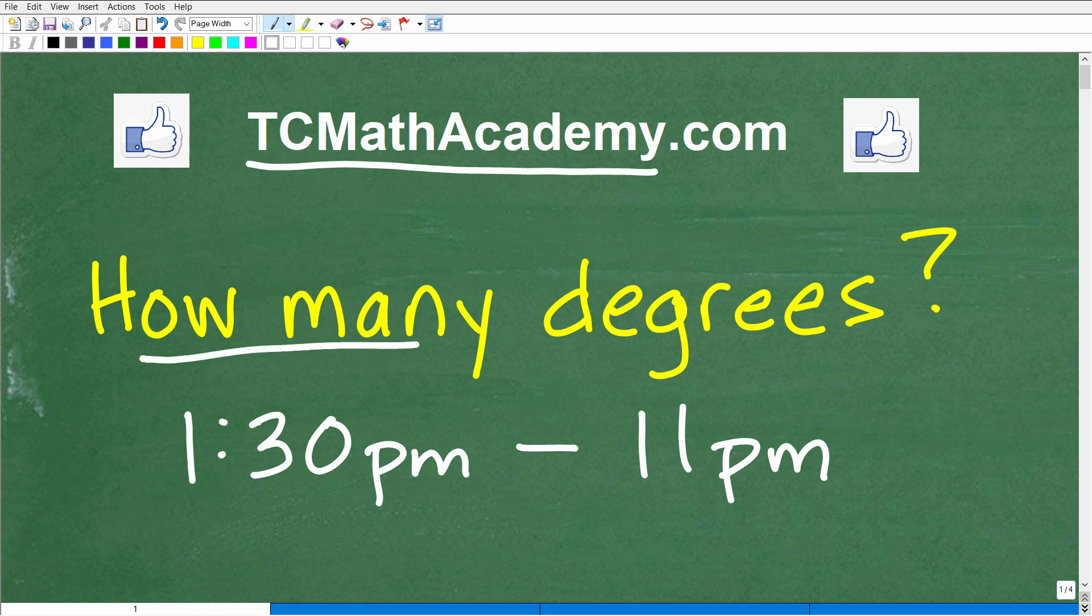So it says, how many degrees are there between 1:30 PM and 11 PM? And just to kind of make this extra clear, you want to think of this in terms of a nice little round circular clock face.